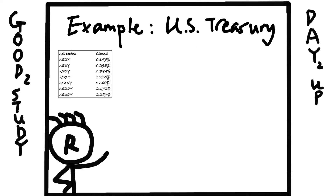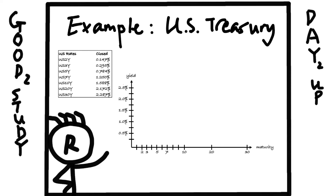Let's look at an example of how to draw a yield curve. Here we have the US Treasury yields for 2, 3, 5, 7, 10, 20, and 30 year — these are often referred to as the US benchmark rates. There are three steps to drawing a yield curve: first, draw out the coordinate system; second, plot the points; third, connect the points. Easy enough.